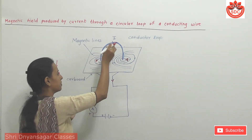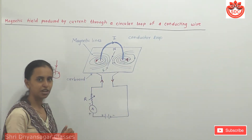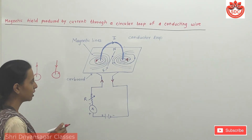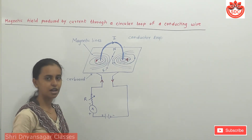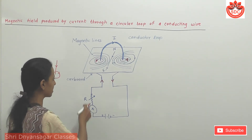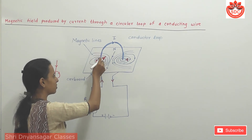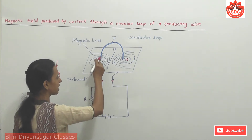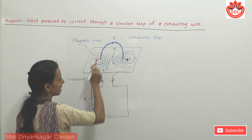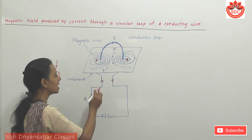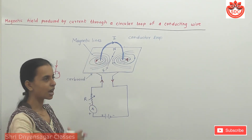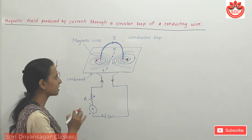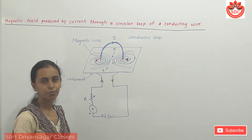If you observe the magnetic field around the same conductor, you can see the field pattern. The current pass produces a concentric circle pattern. The current passing through the circuit produces a magnetic field, which we can observe using iron flakes to compare the magnetic lines of force.